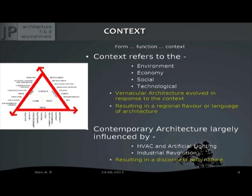Judicious planning can provide a better environment, prosperity, and good health. Vernacular or traditional architecture evolved in response to environment, economy, social and technological context. This resulted in a regional flavor or language of architecture. Vernacular architecture evolved based on the context.